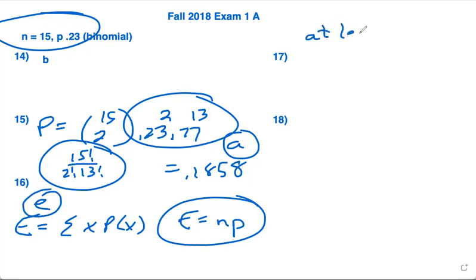Problem 17 wants at least 1, and at least 1 is 1 minus the none case. So there's a 23% chance it's going to occur. There's 1 minus 0.23, which is 0.77, the chance it's not going to occur, raised to the 15th power. So that'd be none of them, and it's 1 minus that answer, which is answer choice C.